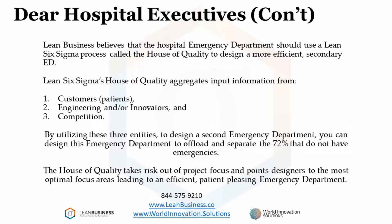Lean Business believes that the hospital emergency department should use a Lean Six Sigma process called the house of quality to design a second, more efficient ED. Lean Six Sigma's house of quality combines inputs from customers, engineering and innovators, and the competition. By utilizing these three entities to design a second emergency department, you can design the second ED to offload and separate the 72%. The house of quality takes risk out of project focus and points designers to the most optimal focus areas, leading to an efficient, patient-pleasing second emergency department.